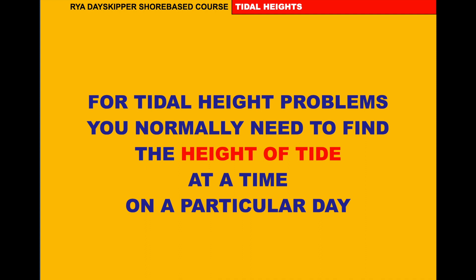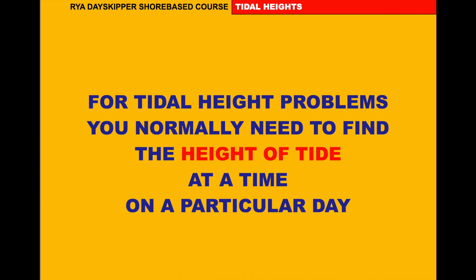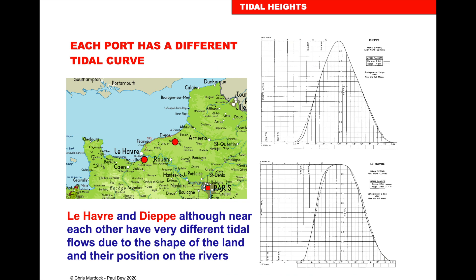We need to work out the height of tide for a time between high water and low water, so we'll use a tidal curve. The tidal curve shows the tide coming in to high water and going out — these are individual for each port. For example, Le Havre and Dieppe have different curves because they're influenced by different geographical features. Always use the curve for the port you're in or the nearest port.